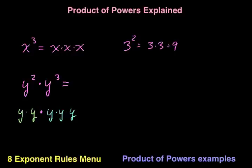So when you think about it, what we've done is we've just expanded y squared, we've expanded y cubed, and now we have y, but it's being multiplied by itself. And you can count them, 1, 2, 3, 4, 5, y is being multiplied by itself 5 times.